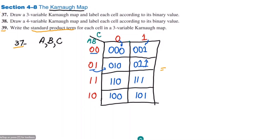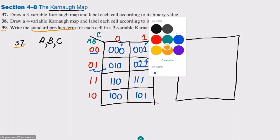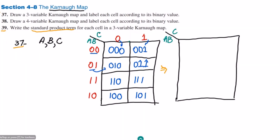Let me draw another map for the three variables, since we are asked to find the values for three variables. Here we have variable C on one axis and A, B on the other. The column values are 00, 01, 11, 10, and the row values are 0 and 1.